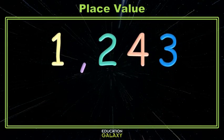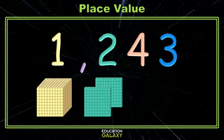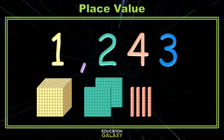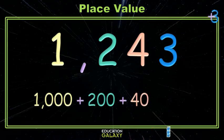Sometimes you'll see numbers represented with place value blocks. For this number, we would have a thousands block for the 1,000, two hundreds blocks for the 200, four tens for the 40, and three little cubes for our three ones. Another way to represent a number is by the sum of its place values. If we replace these blocks with the values they represent and write it as a sum, that's called expanded form. So here we would have 1,000 plus 200 plus 40 plus 3.